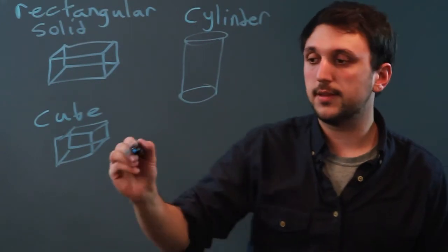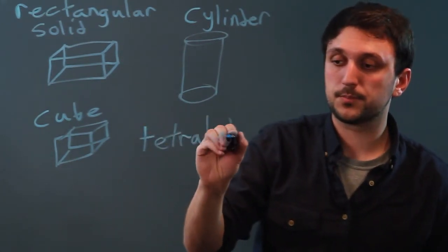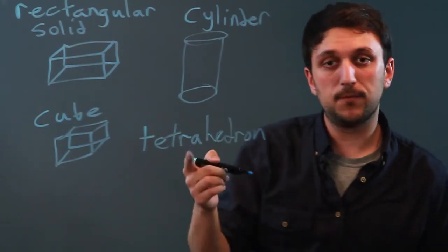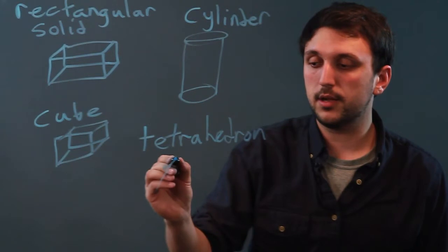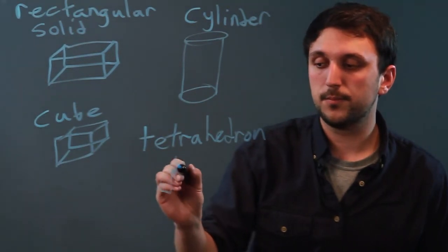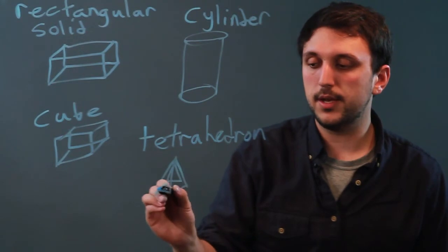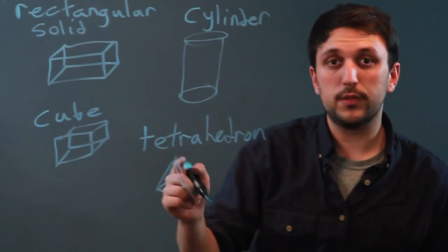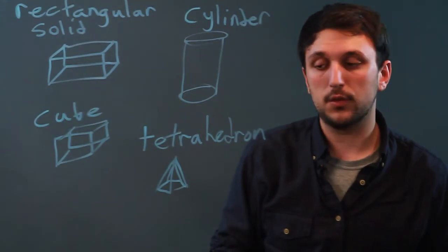And the last one we're going to look at today is the tetrahedron. A tetrahedron is a four-sided shape comprised of all triangles. So think of a pyramid. There'd be one in the back, and then a triangular base. So this would be a four-sided triangular shape called the tetrahedron.